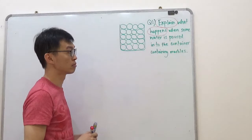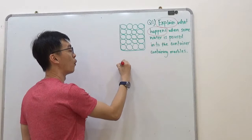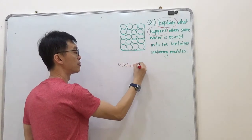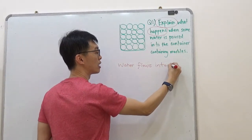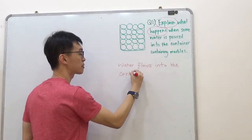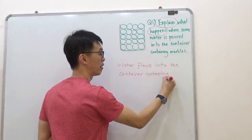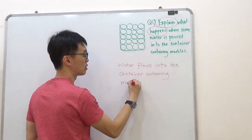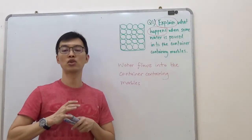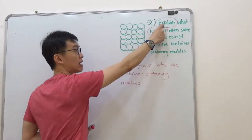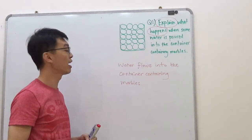What happens when water is poured into the container containing marbles? The answer will be water flows into the container containing marbles. Take note, if this is a two-mark question, you have only just earned one mark. Please don't stop here. You need to explain why water flows into the container containing marbles.